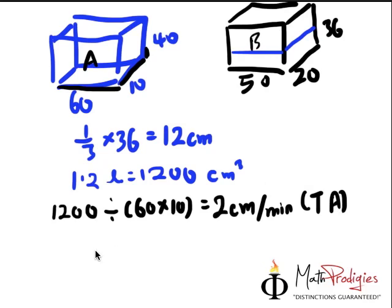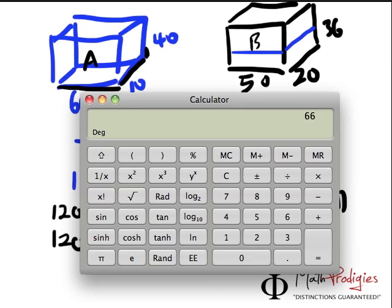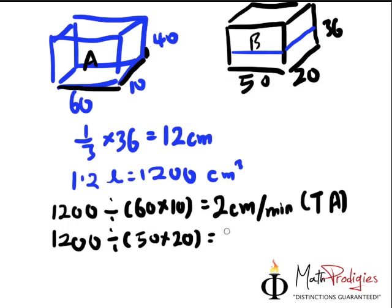For tank B, what happens? For tank B, it's actually 1,200 as well, but divided by 50 times 20, which gives me 100, no, 1,000. Is it 1,000? Yeah, 1,000. Let me calculate it, 1,200 divided by 1,000 is 1.2. So, 1.2 cm per minute, tank B.